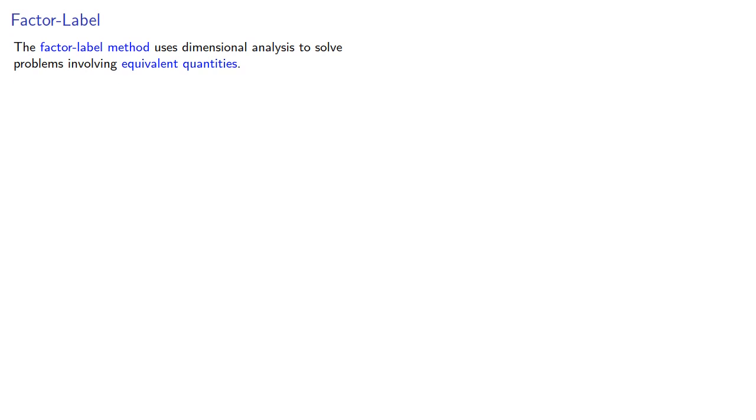The factor-label method uses dimensional analysis to solve problems involving equivalent quantities. These are quantities that are, for purposes of the problem, interchangeable.